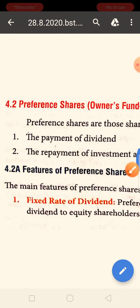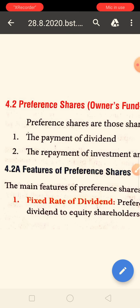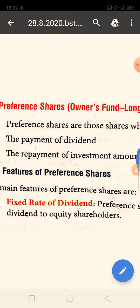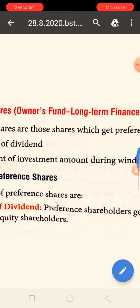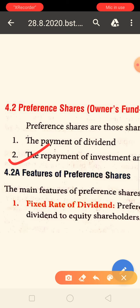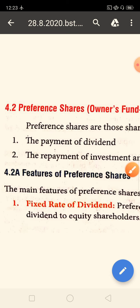The first preference is in the payment of dividend: preference shareholders receive the dividend first, and at the end equity shareholders receive the dividend. The second preference is in the repayment of investment amount during winding up. If a company is winding up, preference shareholders will receive payment first, and then equity shareholders will receive payment.